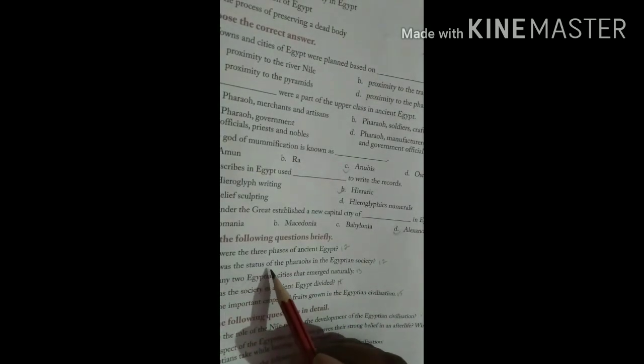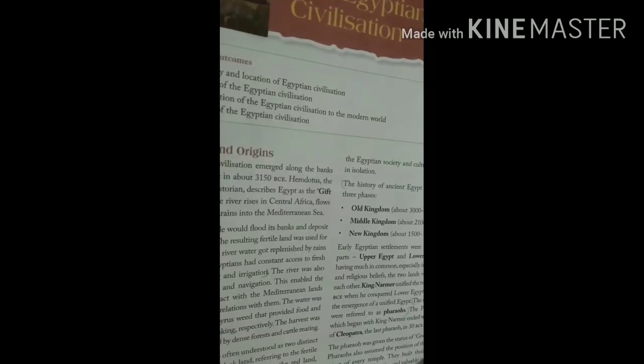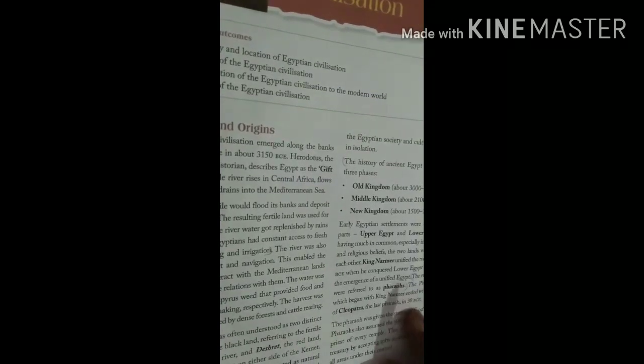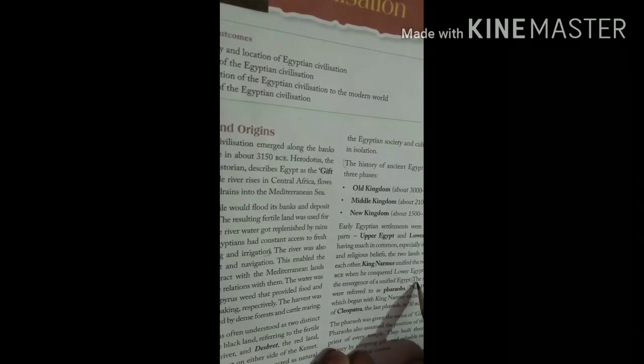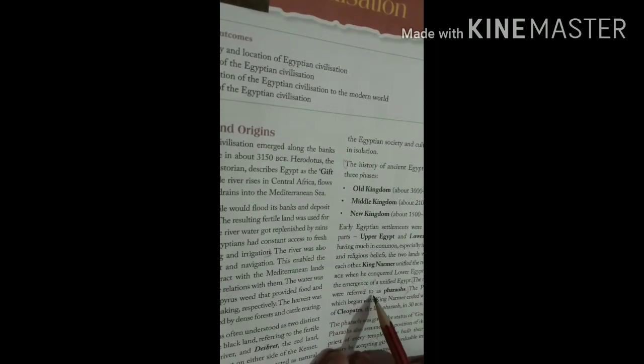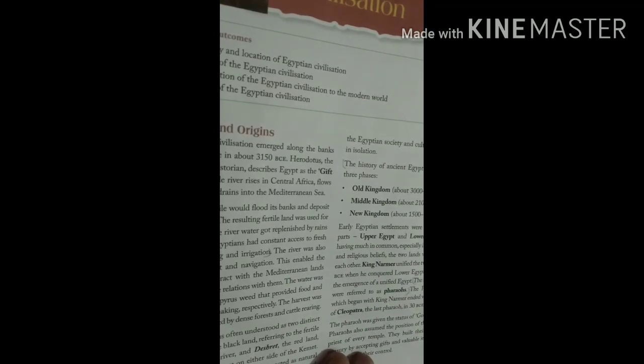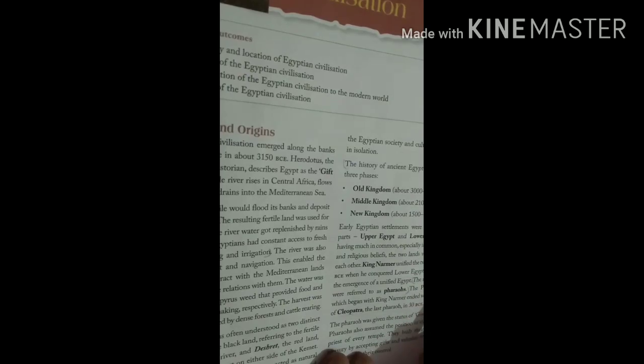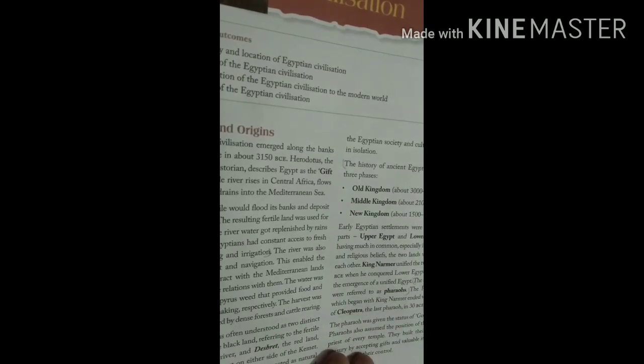Now question second: What was the status of the Pharaohs in the Egyptian society? This is also on page number twelve. The rulers of Egypt were referred to as Pharaohs. This was the status.